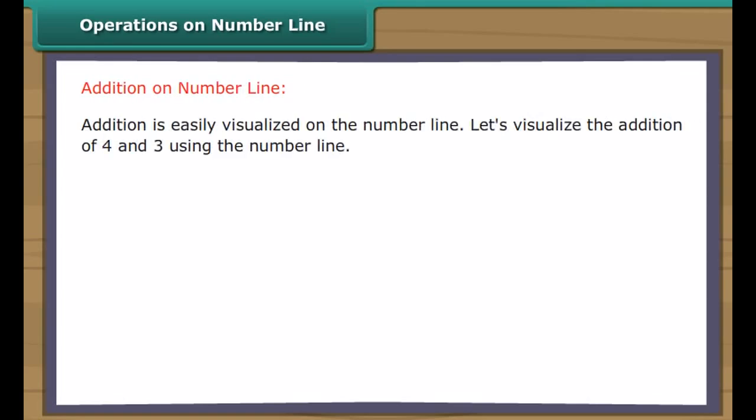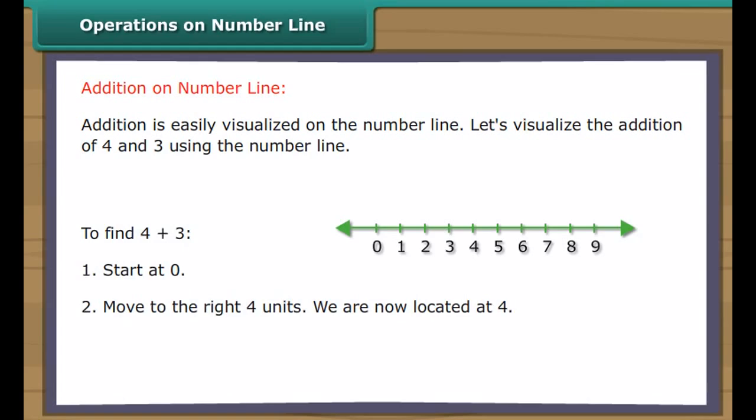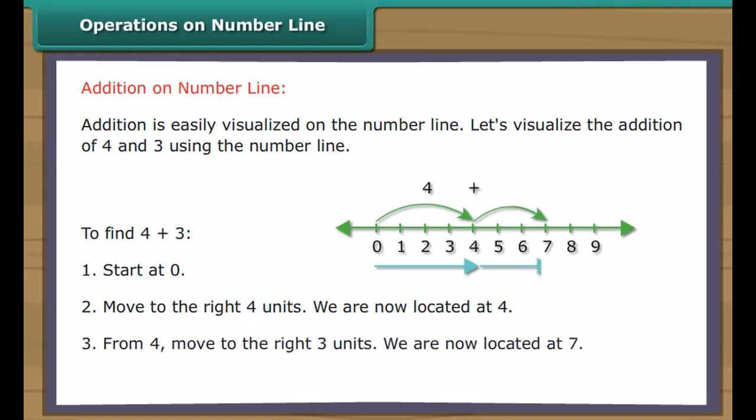Operations on number line. Addition is easily visualized on the number line. Let's visualize the addition of four and three using the number line. To find four plus three: one, start at zero. Two, move to the right four units. We are now located at four. Three, from four move to the right three units. We are now located at seven. Thus, four plus three is equal to seven.